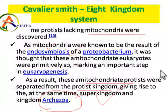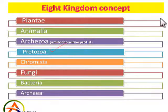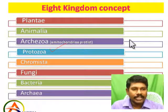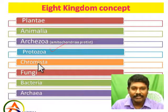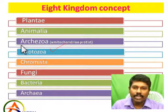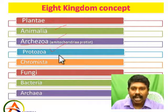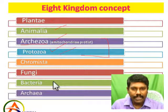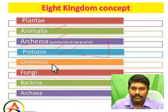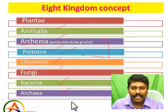That new kingdom is called Archezoa — the old thing, old protists without mitochondria. So Archezoa is a group of protozoans that lack mitochondria. As a result, these amitochondriate organisms were separated from the Protista kingdom. So we now have eight kingdoms: Plantae, Animalia, Archezoa, Protozoa (new Protista), Chromista, Fungi, Bacteria, and Archaebacteria (Monera split).